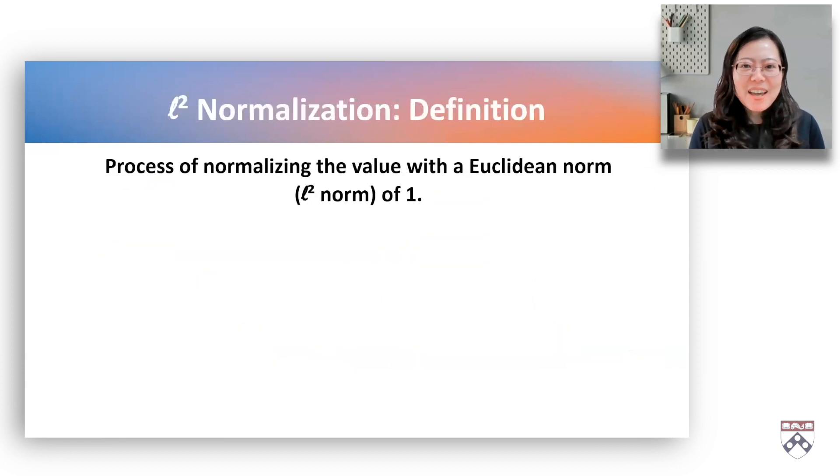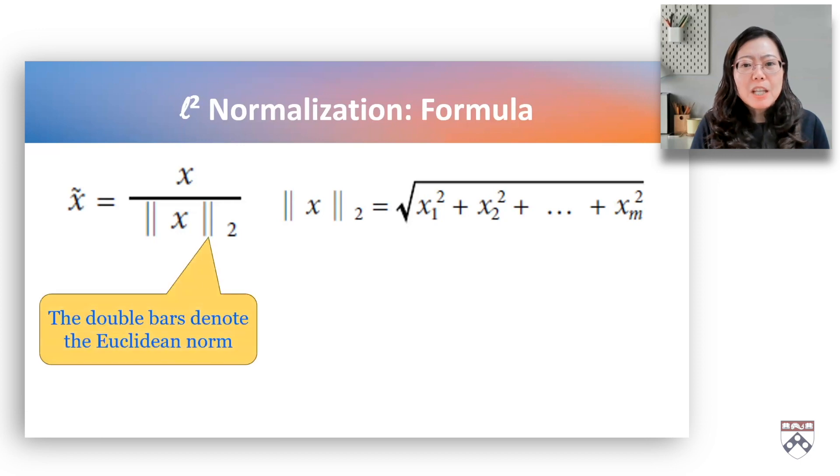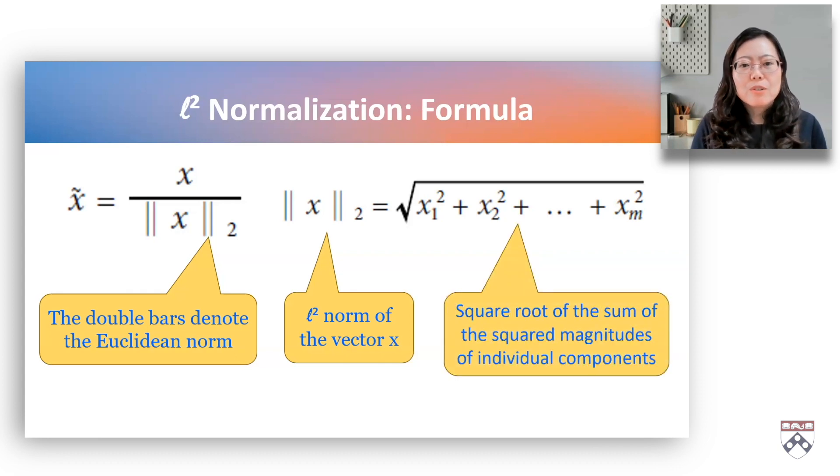L2 normalization is also known as Euclidean normalization or vector normalization. It is used to scale a vector to have an Euclidean norm, or L2 norm, of 1. The L2 norm of a vector is the square root of the sum of the squared magnitudes of its individual components or individual data points. In the formula, the double bars denote the Euclidean norm. The denominator represents L2 norm of the vector x. It is the square root of the sum of the square of individual values.